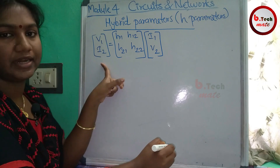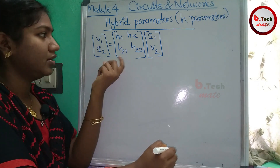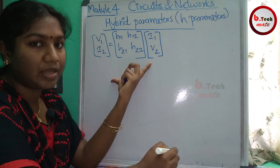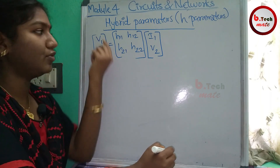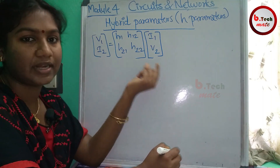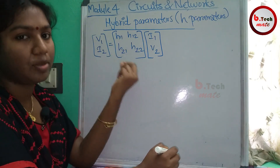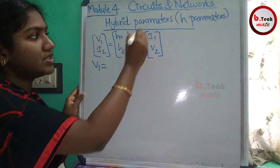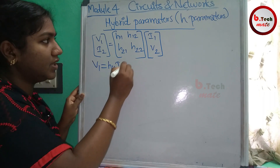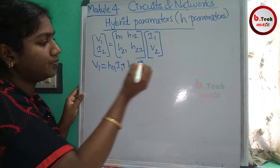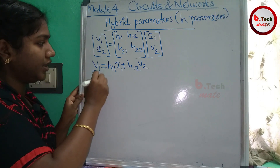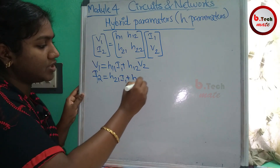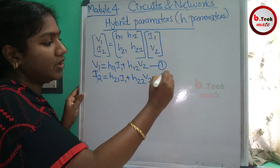On the right side, we have a combination of voltage and current. Now let's take the multiplication equations. V1 is equal to H11·I1 plus H12·V2. Next, I2 is equal to H21·I1 plus H22·V2. These are equations 1 and 2.